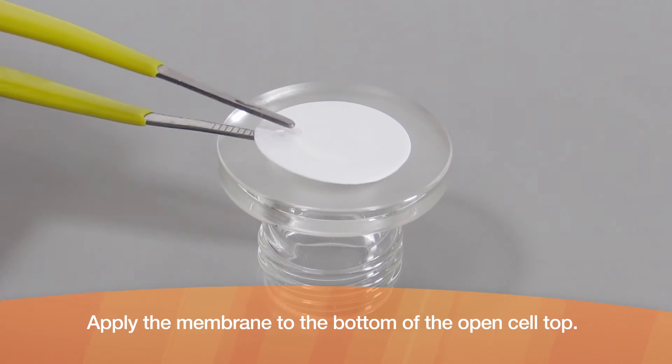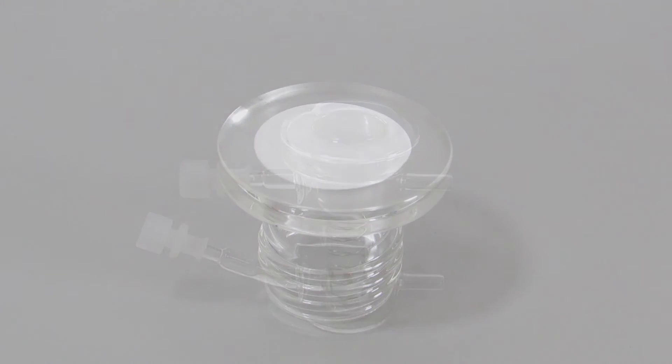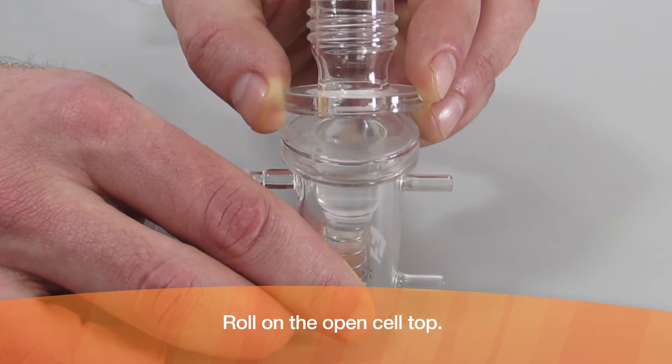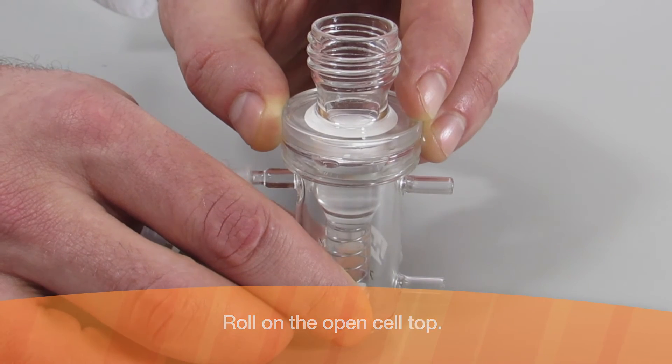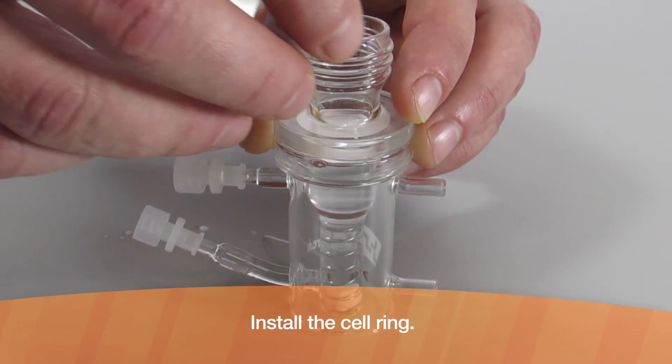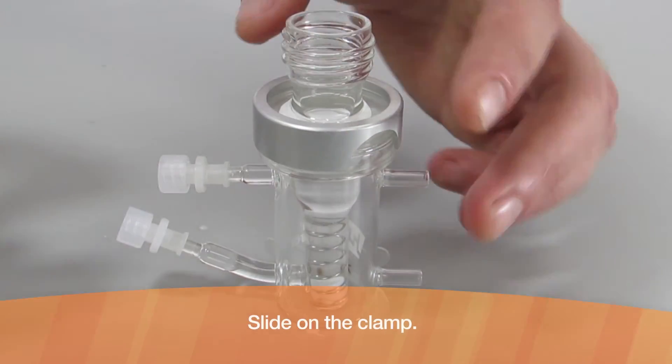Apply the membrane to the bottom of the open cell top. Roll on the open cell top, install the cell ring, and slide on the clamp.